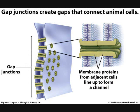Gap junctions make cytoplasmic channels between neighboring cells. They are very similar to the plasmodesmata in plants. They are made from different types of proteins depending on which animal they are in. They join the cytoplasm of the two cells so smaller molecules and particles can be transferred. Gap junctions also prevent the molecules from escaping into the space outside the cells. If intercellular junctions didn't exist, the cells would be unable to work together to form tissues and would have to be isolated from one another.